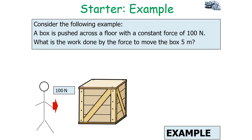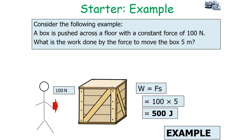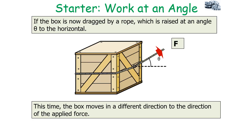Let's consider an example. A box is pushed across a floor with a constant force of 100 newtons. What is the work done by the force to move the box 5 metres? Work done equals force times distance, so it's 100 times 5, which equals 500 joules.